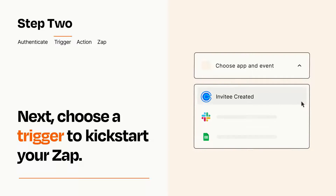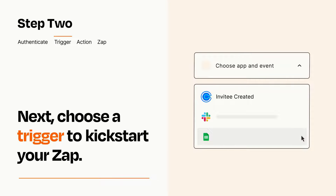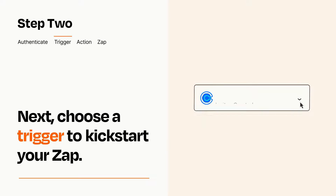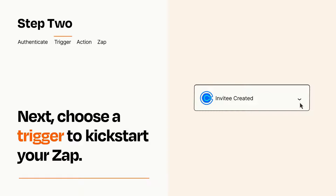Now let's set up your trigger, which is the event that starts your Zap. Pick the trigger event that you want from the list. When you set up this step, your Zap will pull in test data from your trigger app, that you'll see later when setting up your action app.